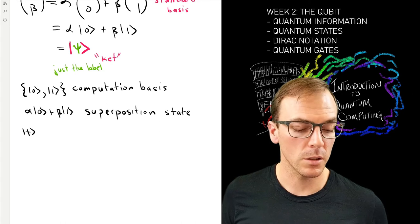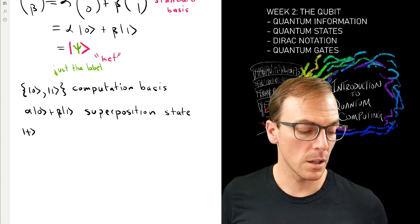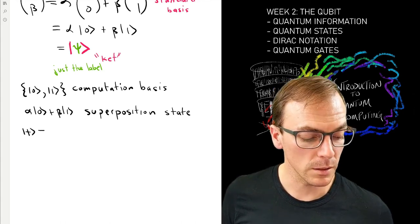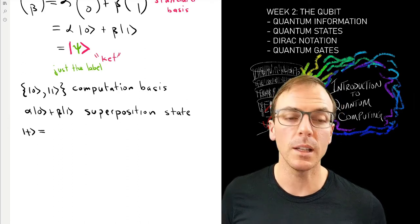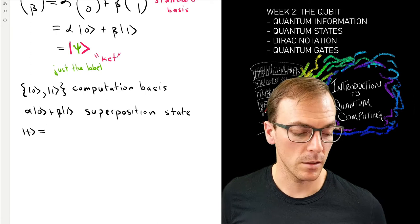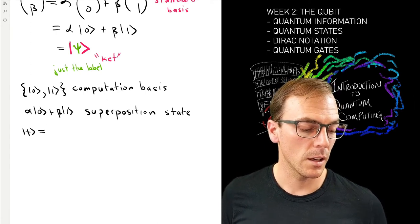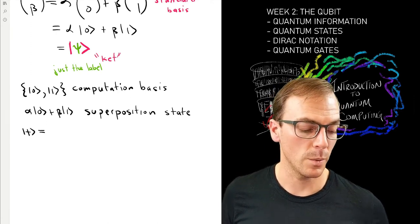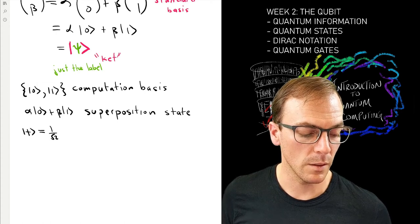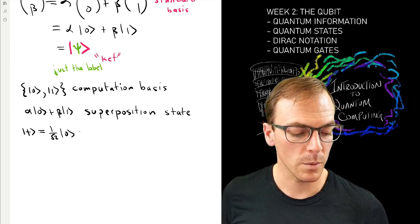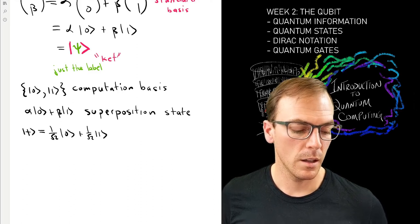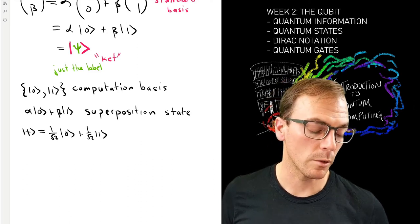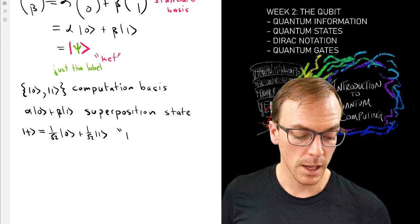Some special superposition states we give their own labels rather than writing them out in full glory detail in their linear expansion in this computational basis. The first one is where the two coefficients are both one over root two. That's called the plus state.